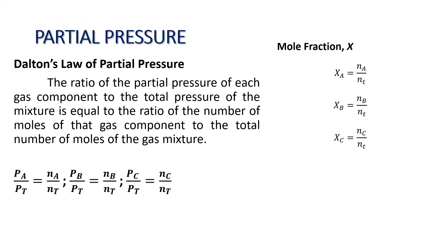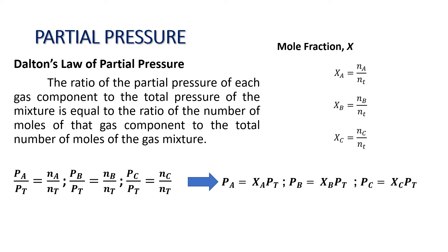Simplifying, mole fraction is denoted by x. The mole fraction of gas A, xA, equals the number of moles of A over the total number of moles in the mixture. Similarly, xB equals NB over Nt, and xC equals NC over total moles. Using these mole fractions xA, xB, and xC, and substituting into our previous equation, we derive that the partial pressure of gas A equals its mole fraction times the total pressure of the gas mixture.